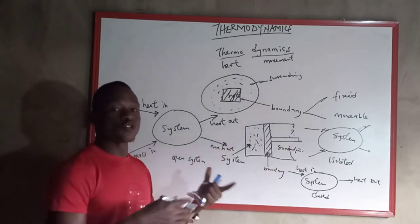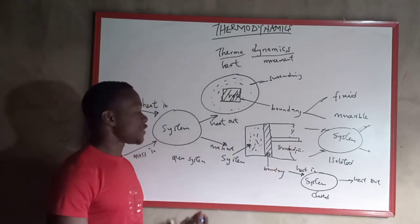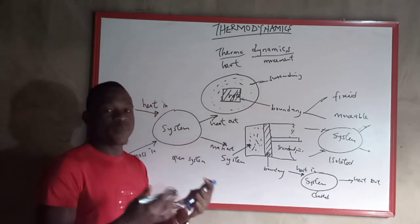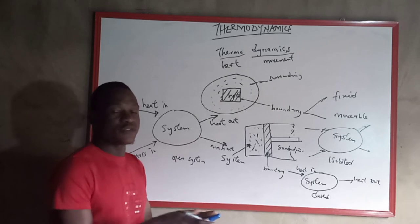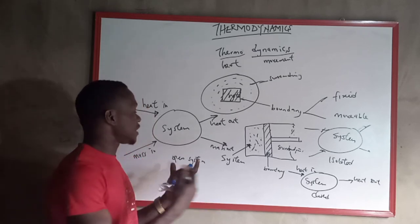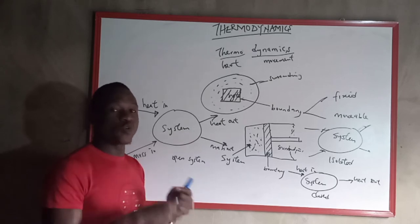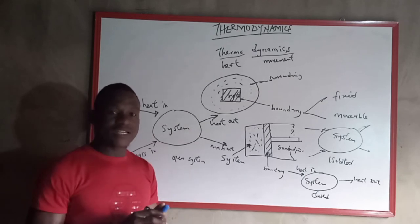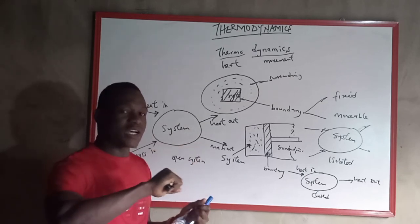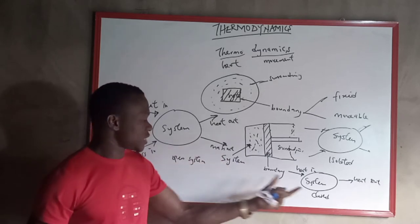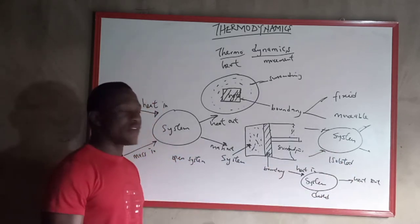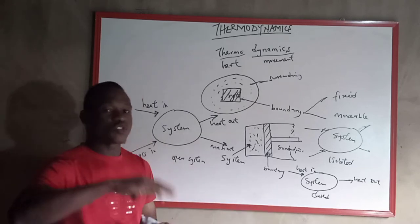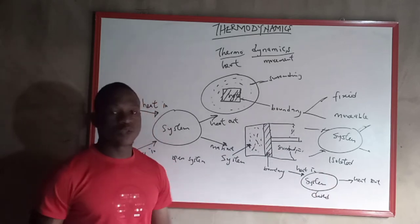Somebody may ask: which system should we choose for a particular operation? The system you choose depends on what you want to achieve with that experiment. If you want the system to exchange heat and mass with the surrounding, use an open system. If you want an airtight container that exchanges nothing, use an isolated system. If you want only heat to be exchanged, go with a closed system.